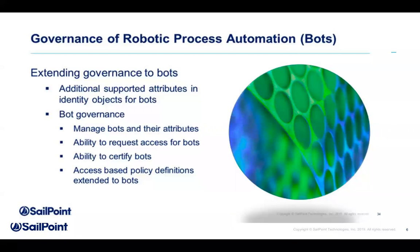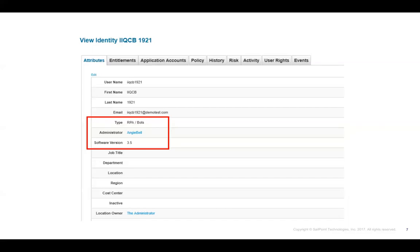We've extended our attributes to be able to support bots as an individual kind of entity in our environment. It has different rules — this is not a person, but it does have a lifecycle. It needs to be governed, certified, reviewed, and have its access looked at. It needs to have an ownership group, somebody that's responsible for it. We're seeing organizations where all these RPAs or bots need to be certified typically once a year. During an audit, you may have to do that ad hoc. We can manage bots and their attributes just like an identity, do access requests for bots, certify them, and create segregation of duty policy violations for bots.